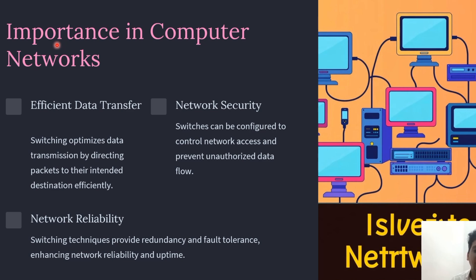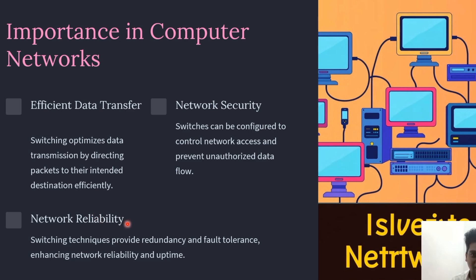The main important things to note in computer networks: number one is efficient transferring of data — switching helps to optimize data transmission by directing packets to the correct destination. Number two is providing security to the network, helping to prevent unauthorized data flow. Number three is reliability, providing redundancy and fault tolerance to enhance network reliability.